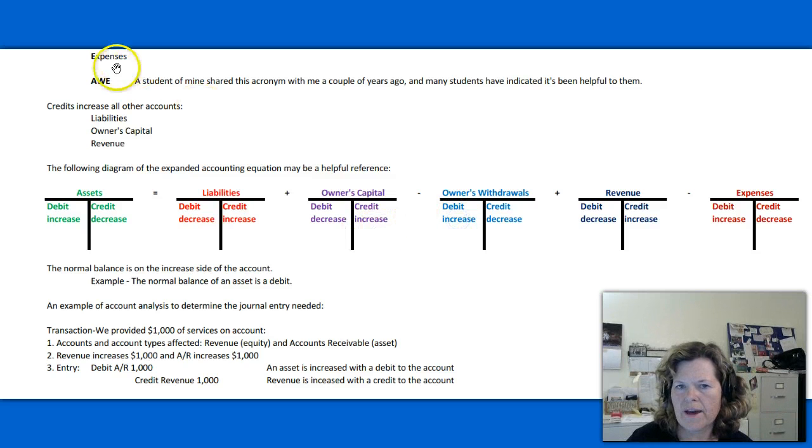Owner withdrawals. Remember that acronym up here, AWE. Debits increase. Credits decrease. Revenue. Debits are going to decrease and credits increase. They're listed right here. And lastly, expenses. Debits increase and credits decrease.